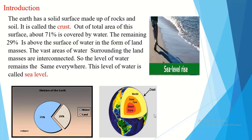The height or the depth of any point on the earth's surface is measured with reference to this level. For example, Mount Everest, which is the highest point on the earth's surface, is 8,848 meters above the sea level.